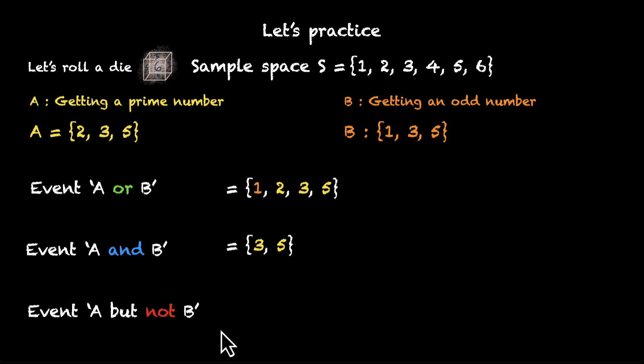Let's look at the last one, A but not B. So, we'll start with the elements in A: 2, 3, and 5, and get rid of the things that are in B. So, we have 3 and 5. Let's get rid of them. We're left with only 2. So, that's your event A but not B.